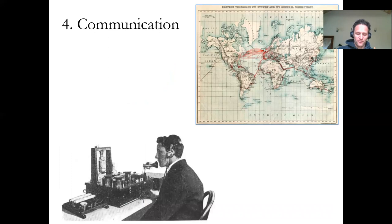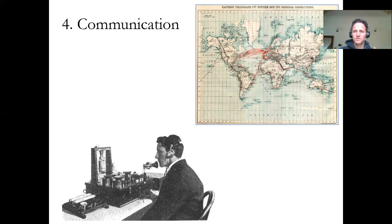The Industrial Revolution also transformed communication with the creation of the telegraph. This map shows all the underwater telegraph lines that were created, so you could share information across continents. Imagine how different that would be — if you wanted to send a message to someone, it used to have to go on a boat all the way from Europe to the Americas. But now with the telegraph you can send a message from New York to London in a matter of seconds. It totally transforms how people communicate, how ideas are shared, and increases knowledge around the world.